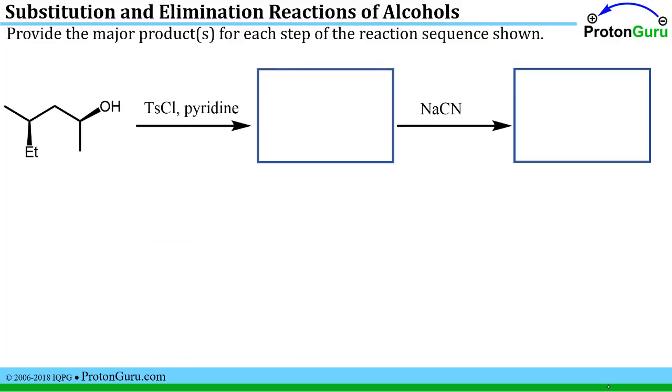Now as you go through your study of organic chemistry, you'll be faced with these reaction sequences, or reaction strings as some people call them. So we're going to incorporate some reaction of alcohols with a reaction we saw earlier in our organic studies. So here we're asked to provide the major product for each step of the reaction sequence shown. So we look at the first step where we have tosyl chloride and pyridine, and we ask ourselves, well, what kind of reaction is that?